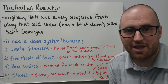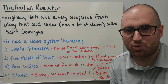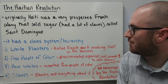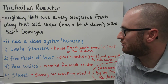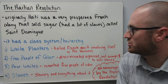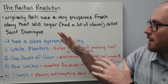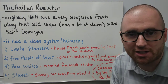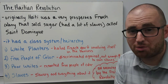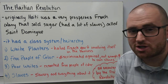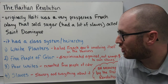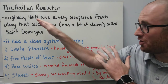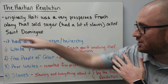This video is about the Haitian and Latin American Revolutions. We're going to start with the Haitian Revolution because it's a unique situation. Originally, Haiti was a very prosperous French colony that sold sugar — it had sugar plantations. They had a ton of slaves and it wasn't called Haiti, it was called San Domingo.